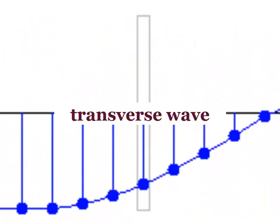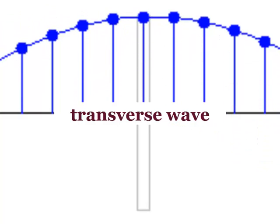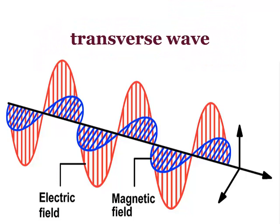Some examples of transverse waves are a guitar string vibrating after being plucked, electromagnetic waves which make up radio waves and light.